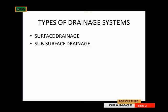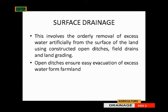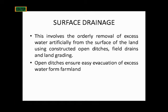We have two types of drainage system. First is the surface drainage. The surface drainage involves orderly removal of excess water artificially from the surface of the land using constructed open ditches, field drains, and land grading. The open ditches ensure easy evacuation of excess water from the farmland, so the water can easily go in there rather than stay on your farmland.